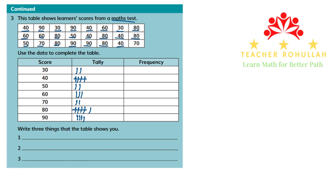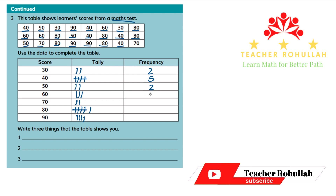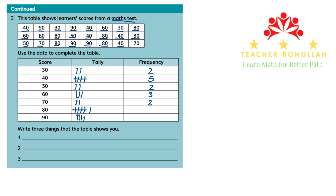Now that we are done recording the data using tally marks, we have to write the frequency. Frequency shows how many times something has occurred. How many times do we have 30? Two times. How many times we have 40? It is 5. We have 2 times 50. We have 3 times 60. 2 times 70. 6 times 80. And 4 times 90.